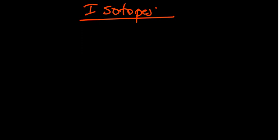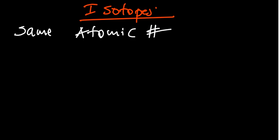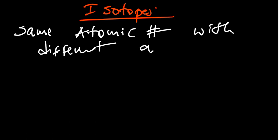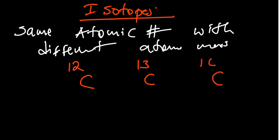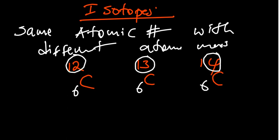Now we talk about isotopes — a concept from high school. Isotopes are atoms of the same element with the same atomic number or proton number, but different mass numbers or atomic masses. For example, carbon-12, carbon-13, and carbon-14 all have an atomic number of 6, but their mass numbers are different. These are called isotopes.